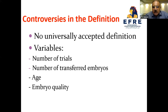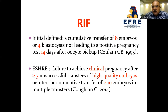The variables that must be included in any definition are: number of trials, number of transferred embryos, age of the patient, and embryo quality. Initially, RIF was defined as a cumulative transfer of eight embryos or four blastocysts not leading to a positive pregnancy test 14 days after oocyte pickup.